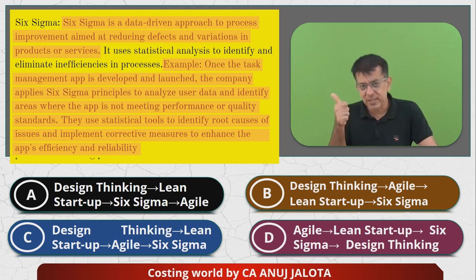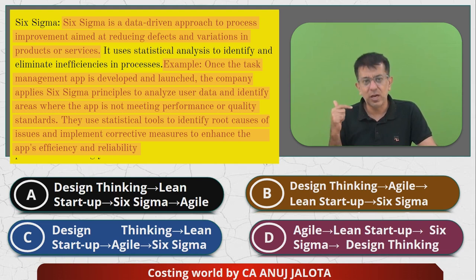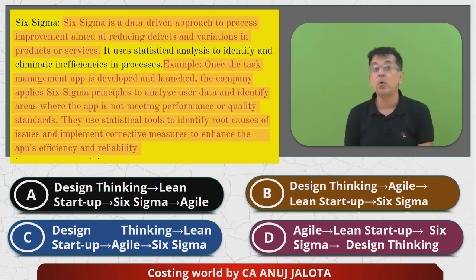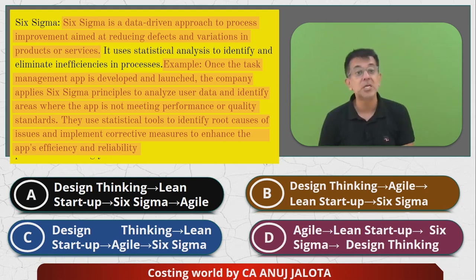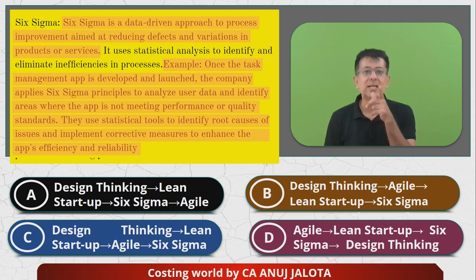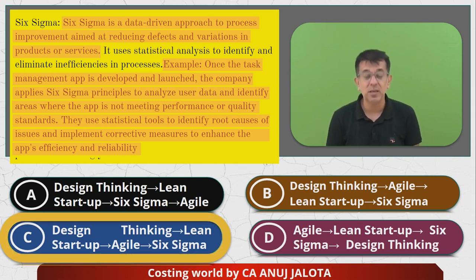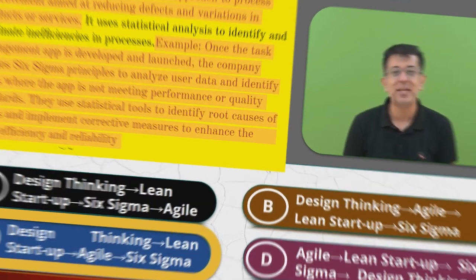These four stages in the correct order are: Design Thinking, Lean Startup, Agile, and Six Sigma — which corresponds to option C. That is the correct answer. See you next time in another question. Happy learning, bye, take care.